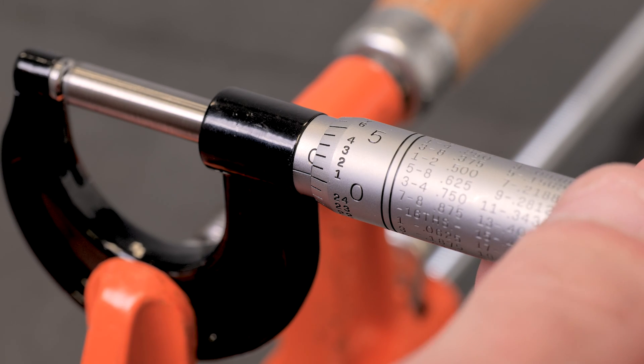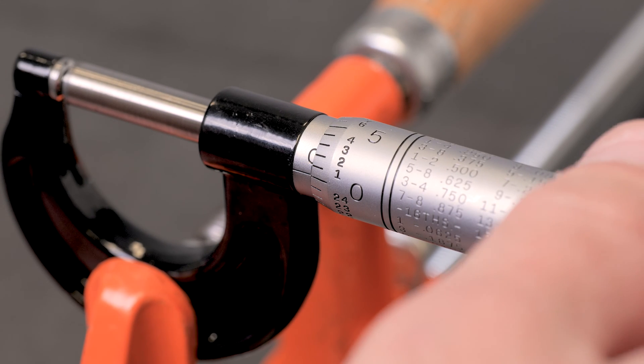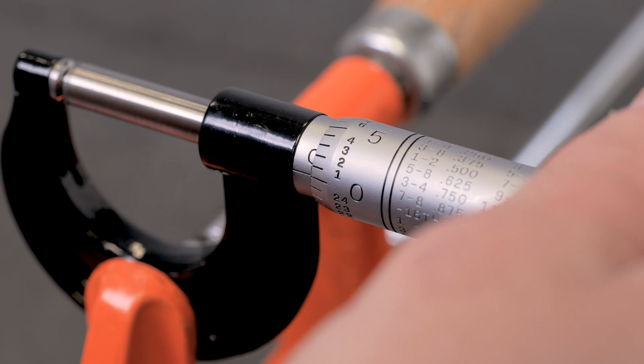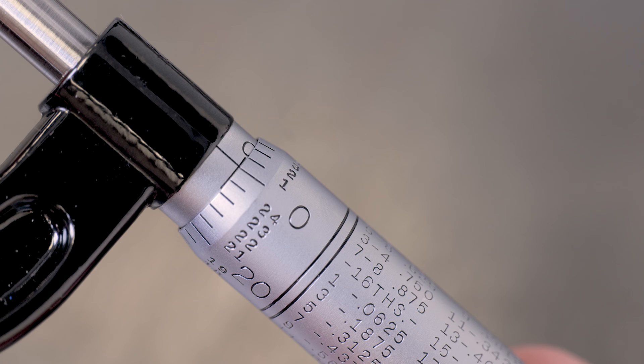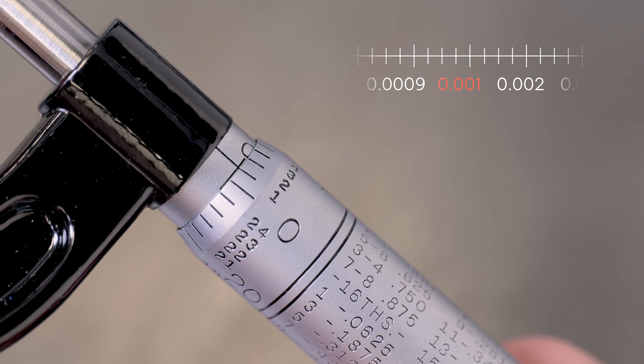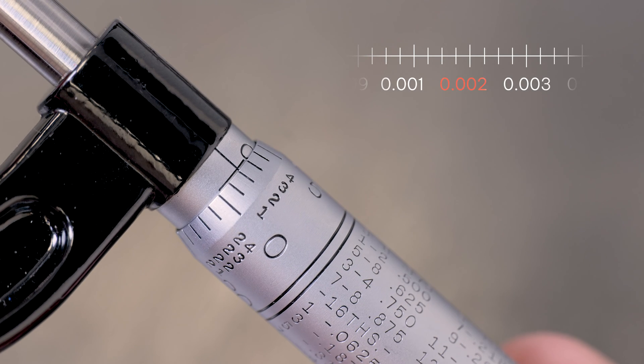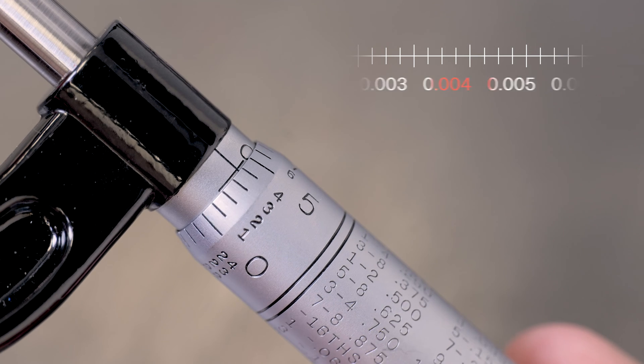So with a micrometer run all the way in, I can see that the mark on the stationary side aligns with zero on the movable side. That's zero. If I open it up to the first mark, that's a thousandth of an inch, two thousandths, three, four, five.